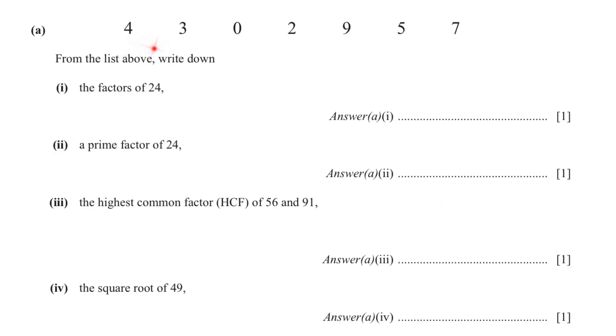In this question, a few numbers have been given to us, and from the list, we have to write the factors of 24. Better write down all the factors of 24 so that you don't miss out anything. 1 times 24, 2 times 12, 3 times 8, and 4 times 6. So what are the factors of 24? 2, 3 and 4. A prime factor of 24. From here, we can see that 3 is the prime number and it's a factor of 24.